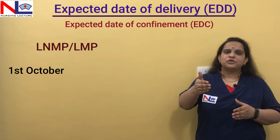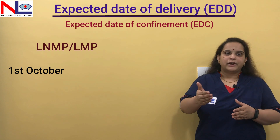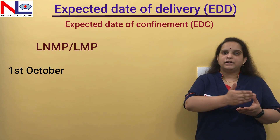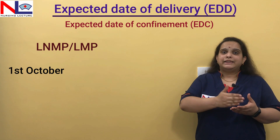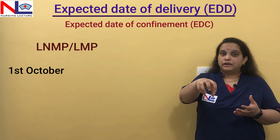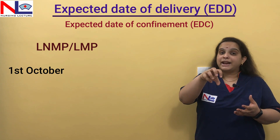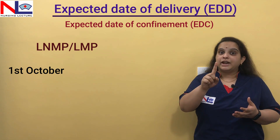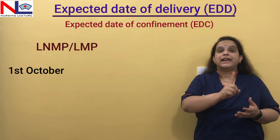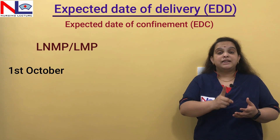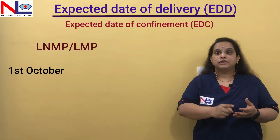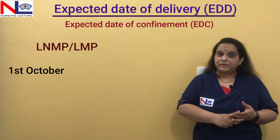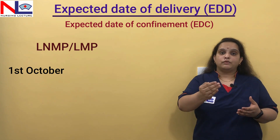The duration of menstruation is about three to five days. So if your menstruation ranges from the 1st to the 4th of October, we do not take the 4th of October as the last menstrual period date. We take the 1st of October as the LNMP. Please note this carefully — we always take the first day of the menstrual period as the LNMP.